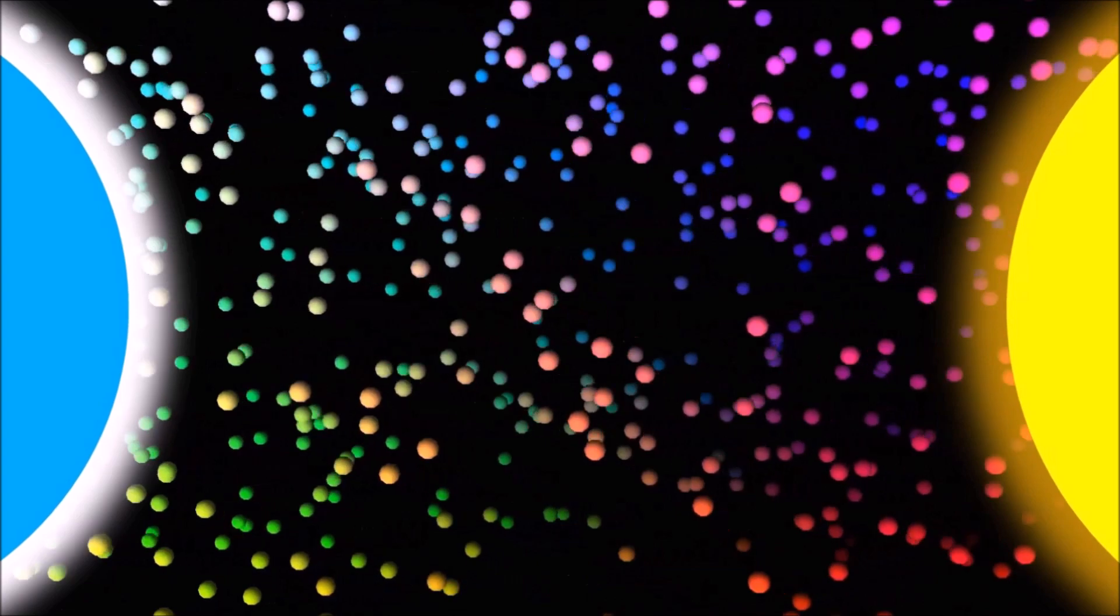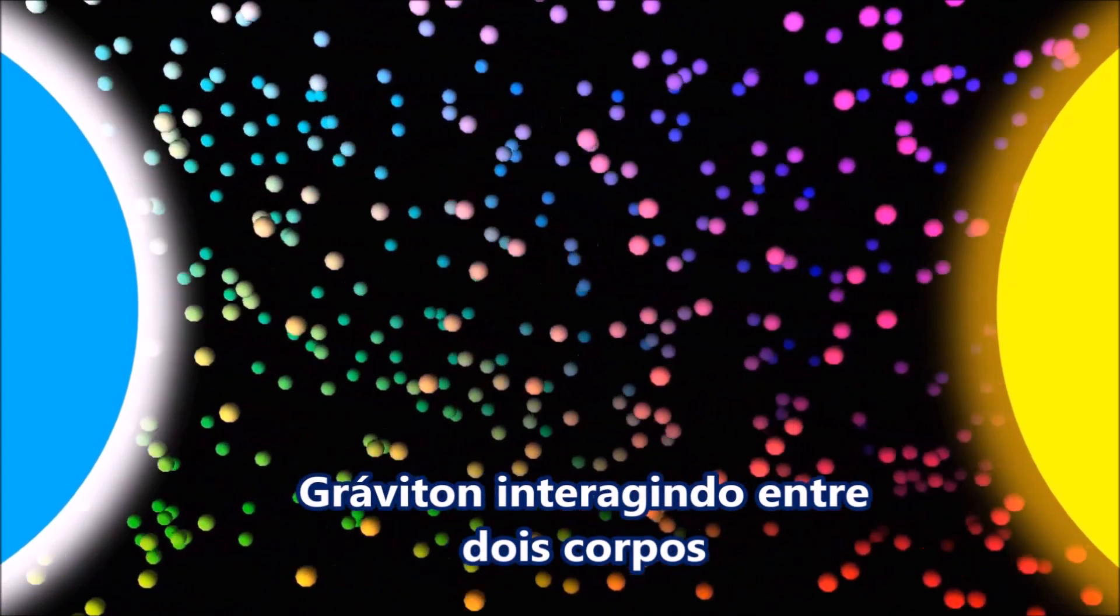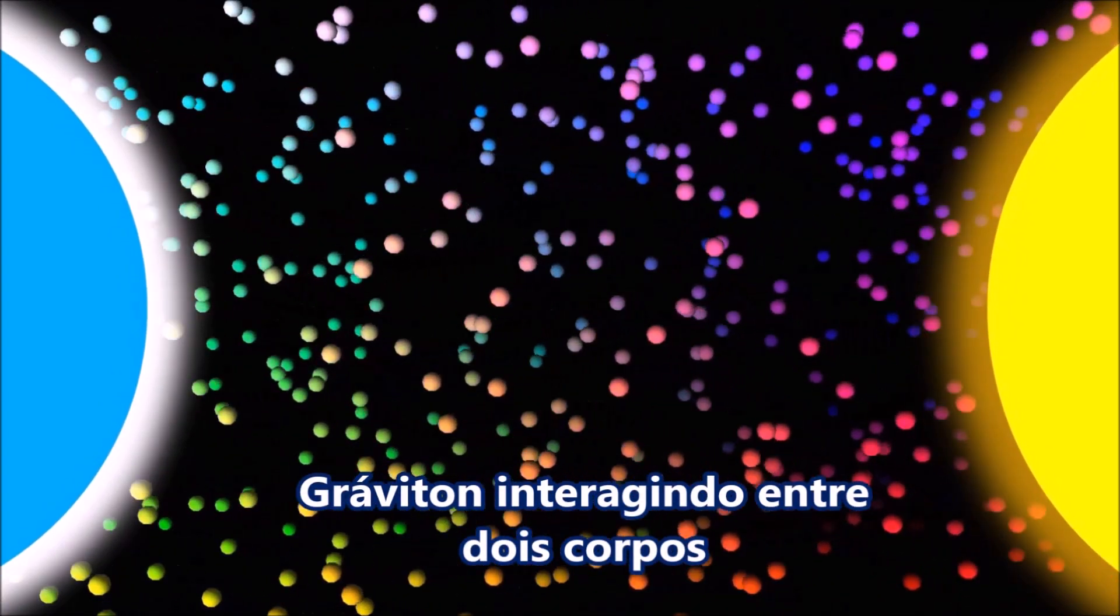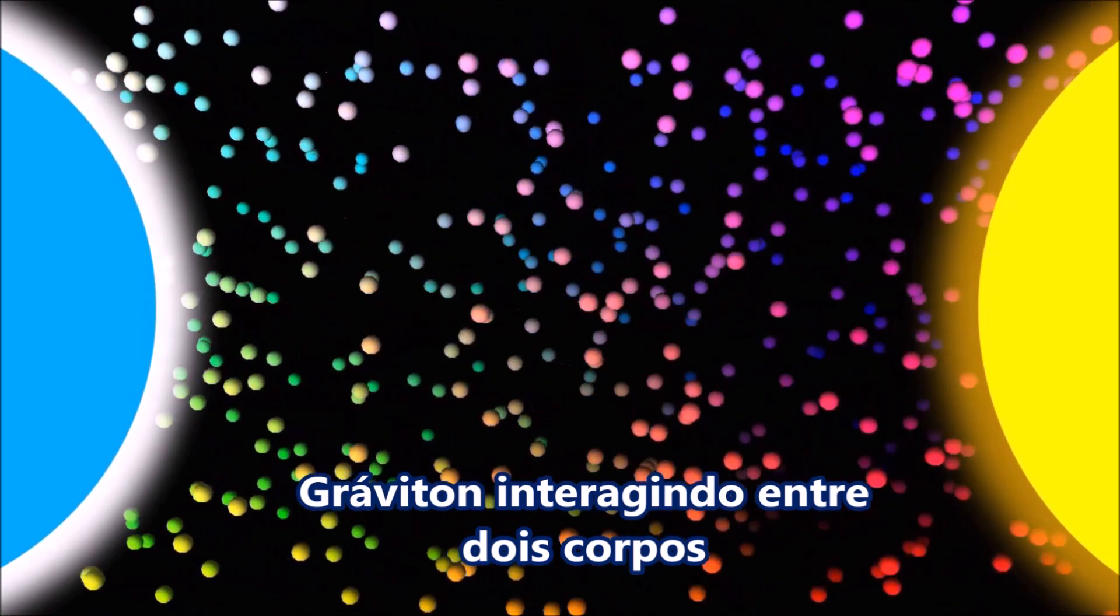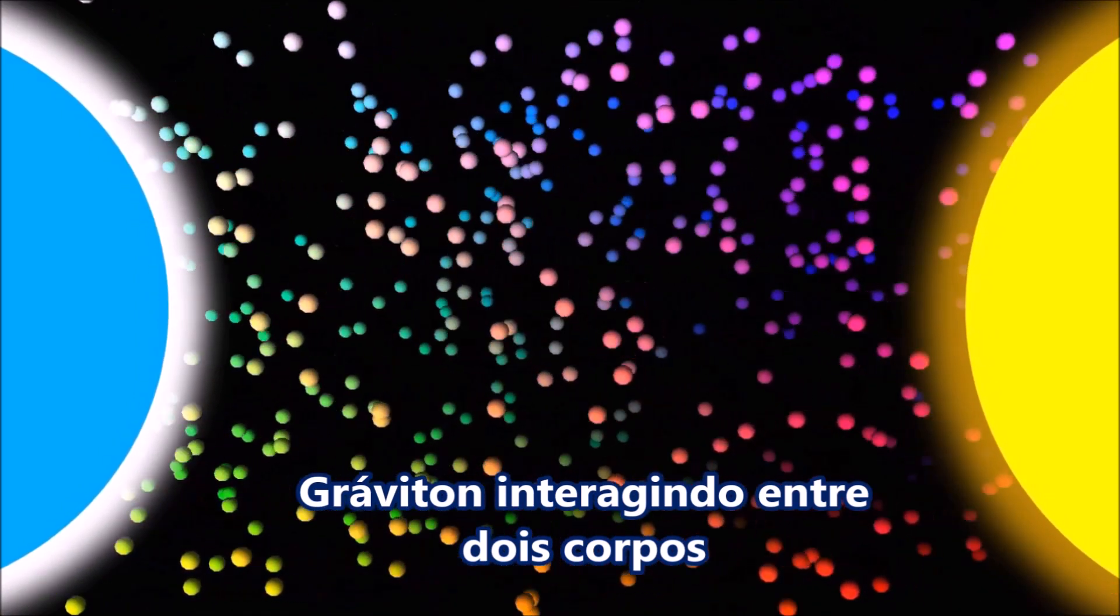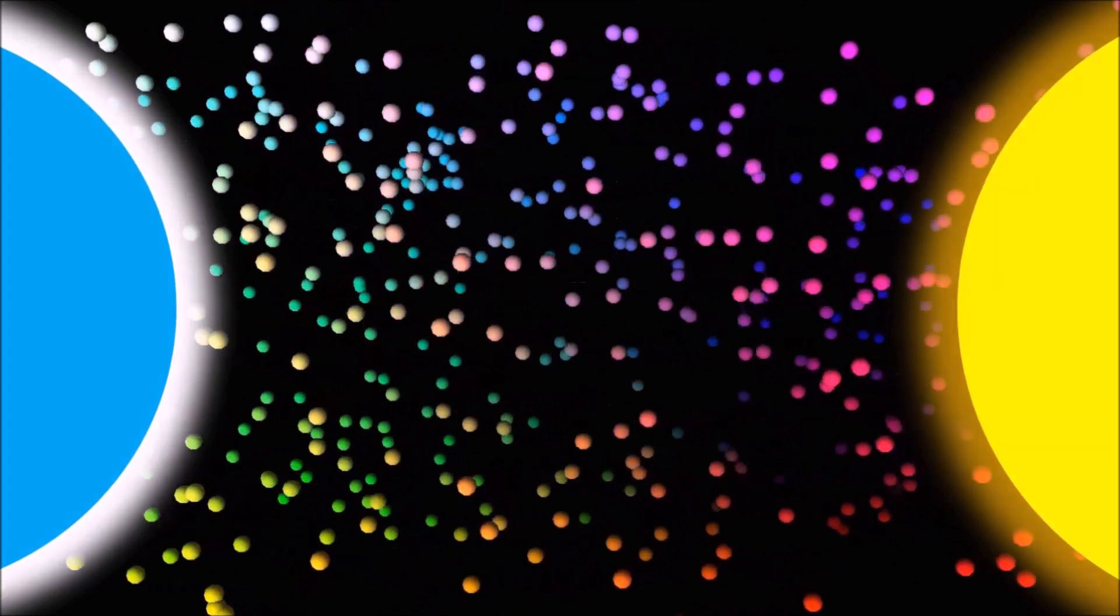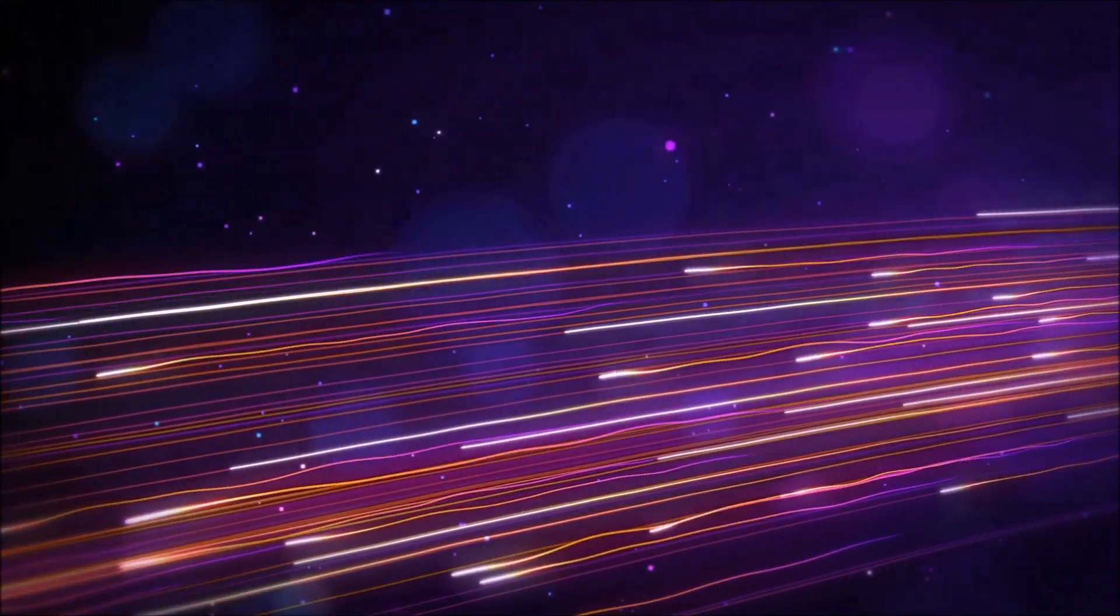Tanto a relatividade de Einstein como a gravitação de Newton não conseguem explicar a existência e atuação da possível existência do graviton no processo de interação da força gravitacional. Esses problemas, juntamente com outros fatores, levaram os físicos a acreditar que uma teoria mais completa do que a relatividade geral deveria regular o comportamento próximo ao comprimento da escala de Planck.